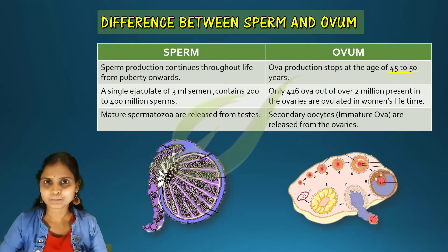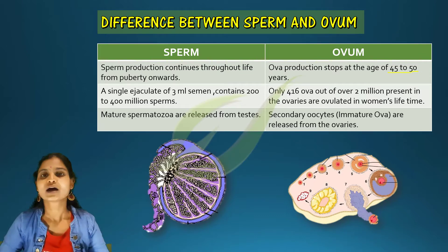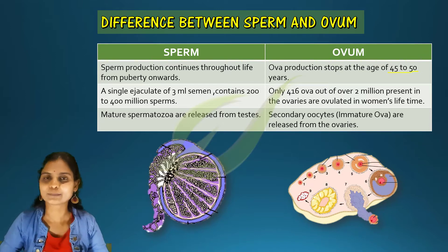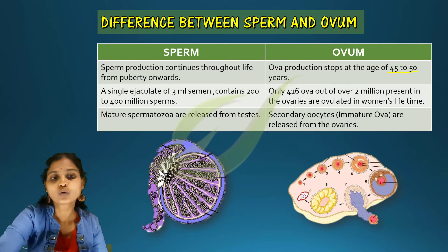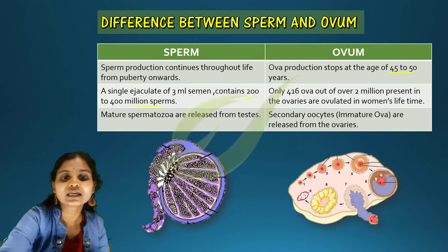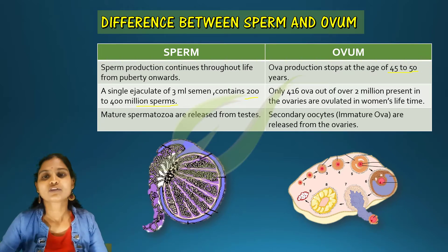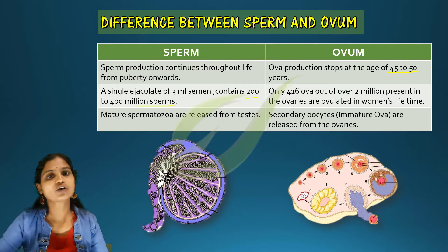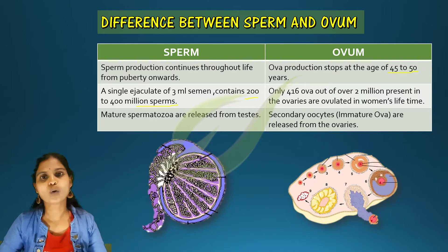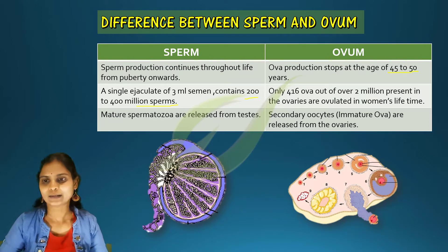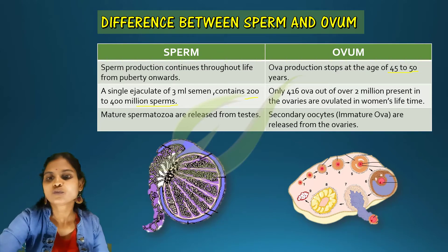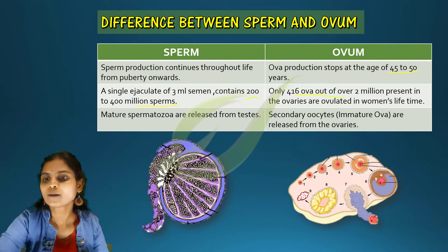During coitus, a single ejaculation releases 3 ml of semen, and in that 3 ml of semen there will be 200 to 400 million sperms present. Whereas in the case of females, only one ovum is released every 28 days.